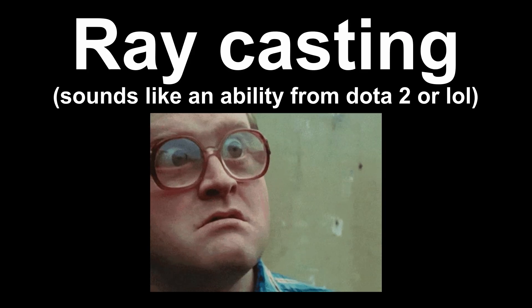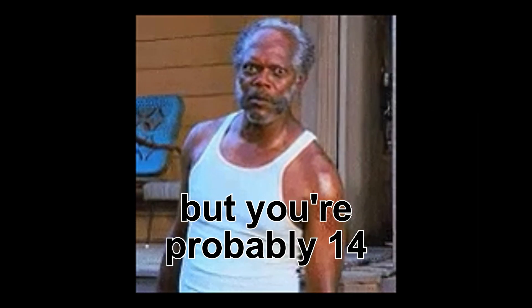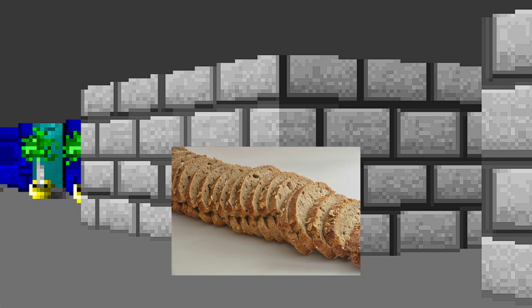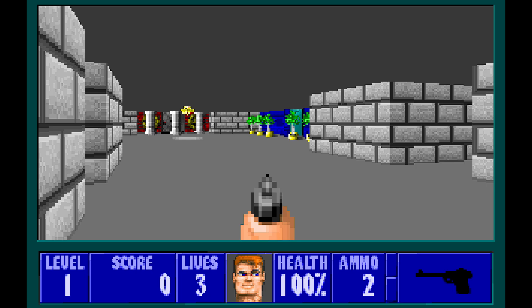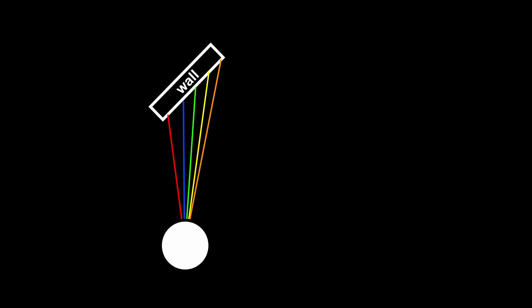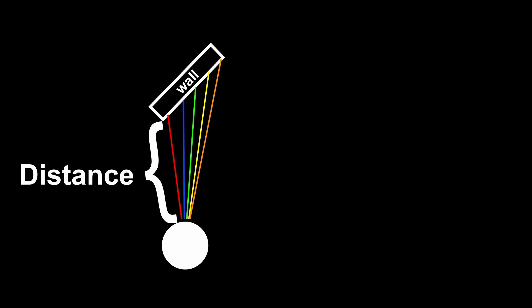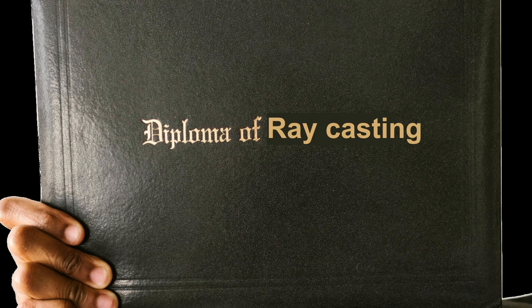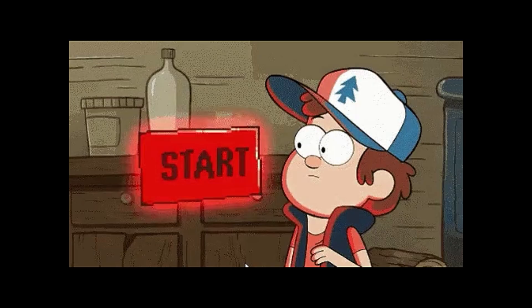Which one are we going to use? Raycasting. And what the f**k is raycasting? If you're old enough then you probably know this game, and the walls look like sliced bread — that's raycasting. We have a player in a 2D space with a field of view, and inside that field we cast rays. When a ray hits an obstacle we find the distance to that obstacle. The shorter the distance, the taller we draw that slice. But now you're a raycasting expert, so let's code.